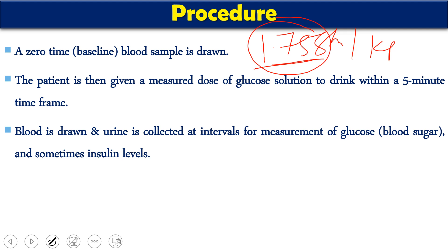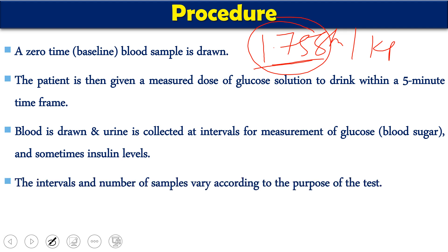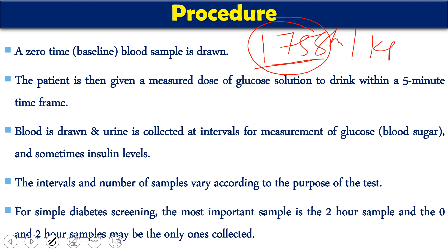Once the glucose is given to drink within the five-minute time frame, blood is taken and urine is also collected at intervals. Blood glucose and urine are collected after every hour, or preferably every 30 minutes. You can also measure insulin levels to see the pattern of insulin release. The intervals and number of samples may vary according to the purpose of the test. Commonly, we take zero-hour, one-hour, and two-hour samples. For simple diabetes screening, the most important sample is the two-hour test, and only the zero-hour and two-hour samples may be collected.